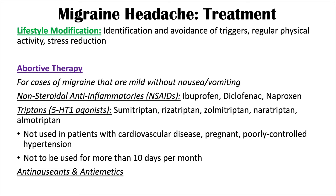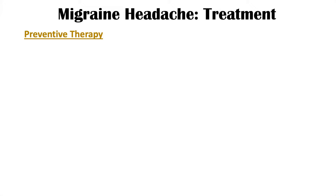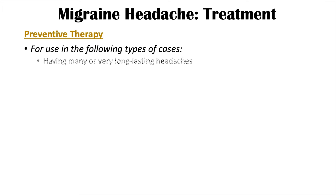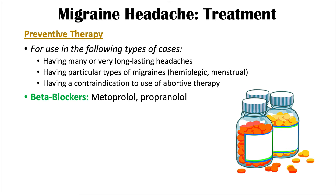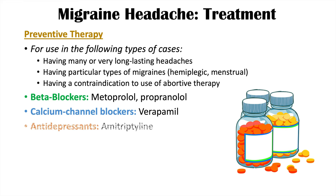Anti-nausea and antiemetic medications can also be used. Another abortive class is the ergots, such as dihydroergotamine. Preventive therapies reduce the risk of future migraines and are used when a patient has frequent or very long-lasting headaches, specific migraine types like hemiplegic or menstrual migraines, or a contraindication to abortive therapy. Preventive options include beta blockers (metoprolol, propranolol), calcium channel blockers (verapamil), antidepressants (amitriptyline), and anticonvulsants (valproate).